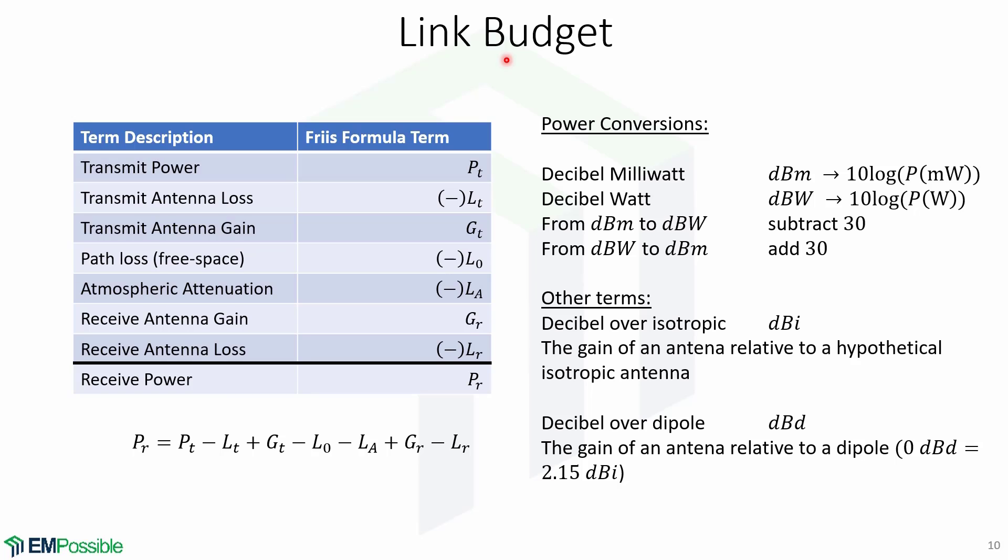With the previous definition of path loss, we can write the remaining terms of the Friis formula as shown in the following link budget, which has a list of the different terms: transmit power PT, transmit antenna loss, transmit antenna gain, the path loss factor, the atmospheric attenuation, the receive antenna gain, and receive antenna loss, to calculate PR or the receive power.